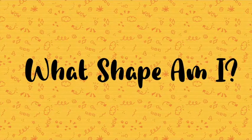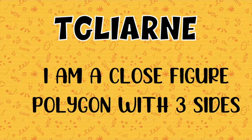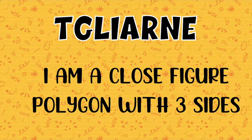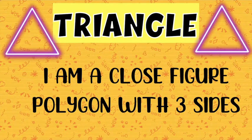Let's play the game 'What Shape Am I?' Are you ready? Let's have the first one. I am a closed figure polygon with three sides. What shape am I? Very good, children! I am a triangle. Always remember that the triangle is a polygon with three sides.